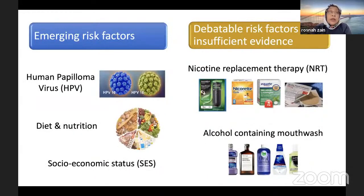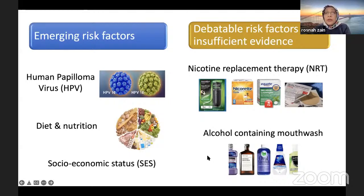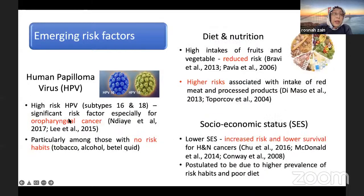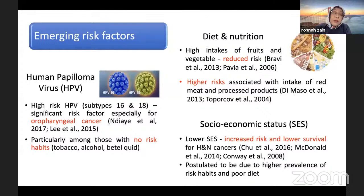Since I've started talking about risk factors, I'll quickly go through the emerging and debatable risk factors. Emerging risk factors are human papillomavirus, diet, nutrition, and socioeconomic factors. The debatable risk factors — with insufficient evidence to associate with oral cancer — include nicotine replacement therapy and alcohol-containing mouthwash. High-risk HPV subtypes 16 and 18 are a significant risk factor, especially for oropharyngeal cancer, not so much for oral cancer proper. True oral cancer forward from the base of the tongue has very little HPV association.